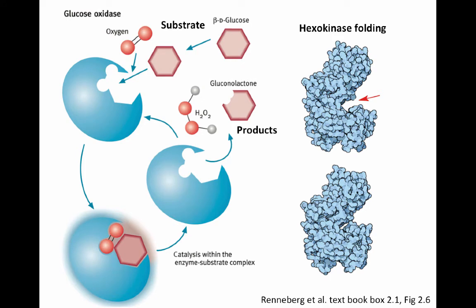Here is another picture demonstrating the folding. The substrates fit into a specific area of the enzyme, the enzyme folds around them, the reaction occurs, and the substrates are released. This part of the enzyme where the substrates fit in and the reaction occurs is called the active site. The active site determines both the specificity and the functionality of these enzymes.